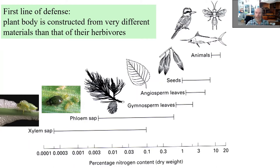Insects feeding on xylem sap must pump and process huge volumes to extract the nitrogen and sugars they need. The most well-known are cicadas, whose larvae feeding on roots have very slow development due to pumping enormous volumes of xylem. Cercopids - a plant hopper family - are also relatively well-known. They protect themselves from predators with foam when in the larval stage, which is easy to produce given the huge volume of xylem sap they process. It is energetically costly for them because they must actively pump the xylem sap.